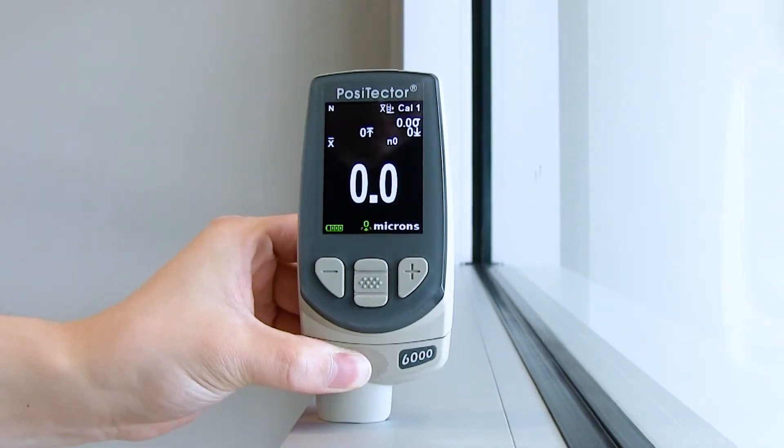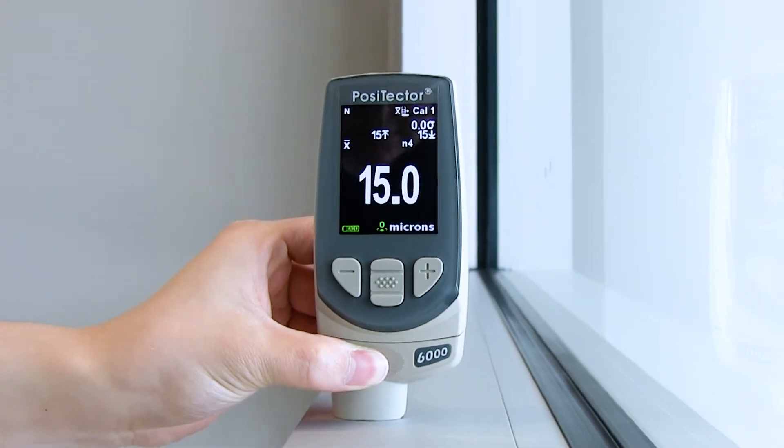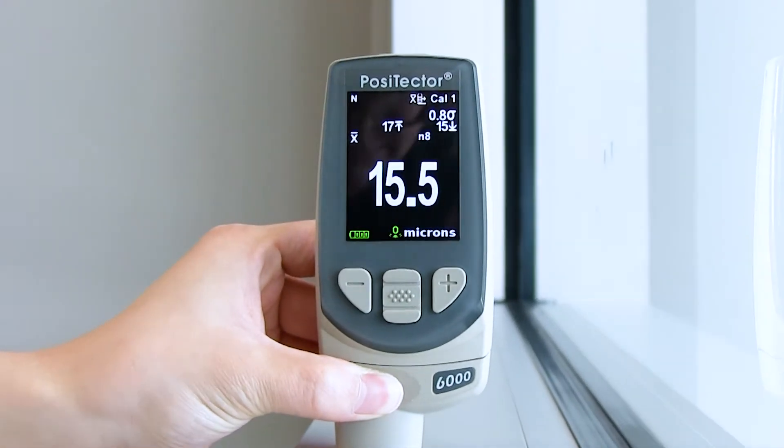In addition to these faster speeds, Positector 6000 models now feature two new scanning modes.